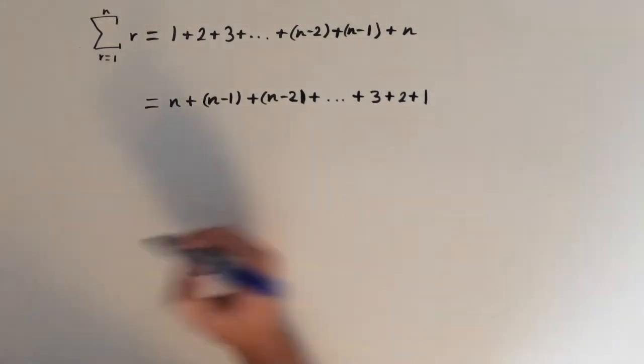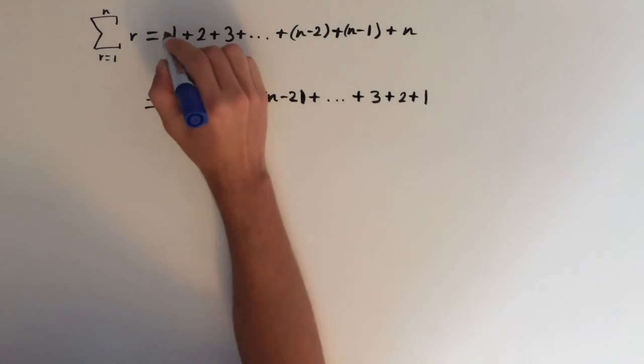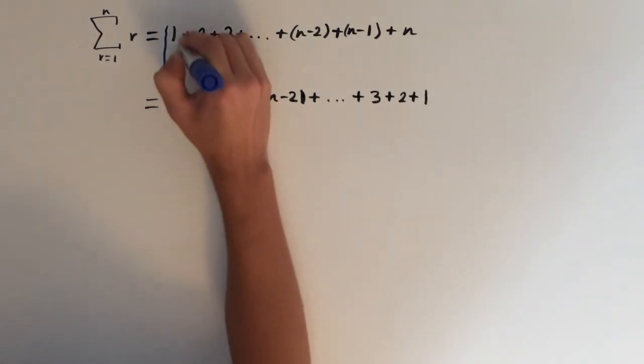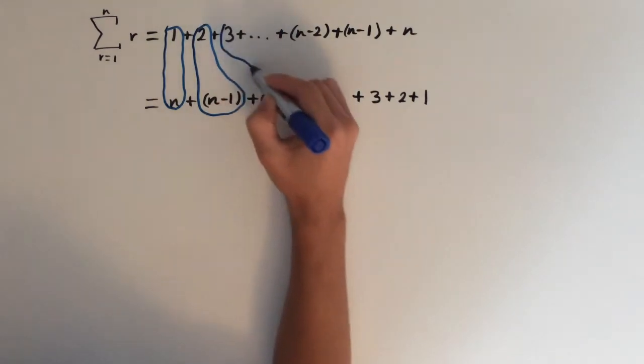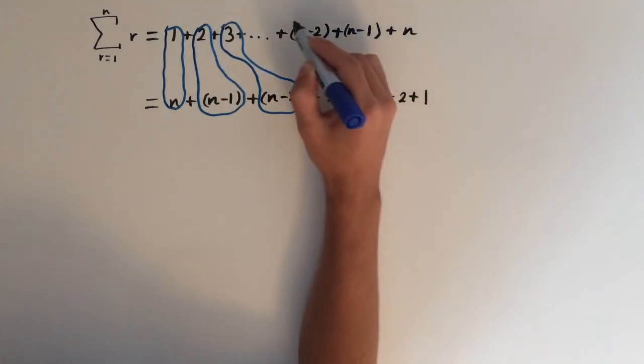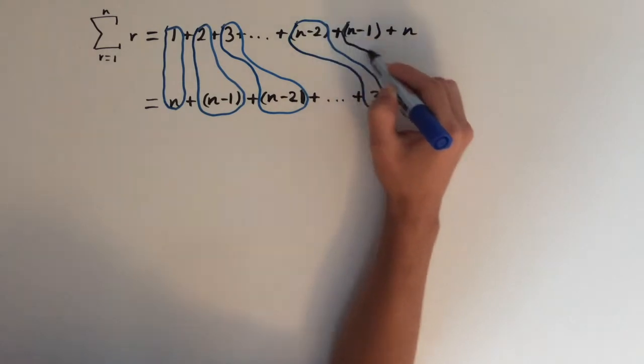What we can do is add these two series together. We'll pair each term up like this: first term with first term, second term with second term, third term with third, all the way down to the last term.